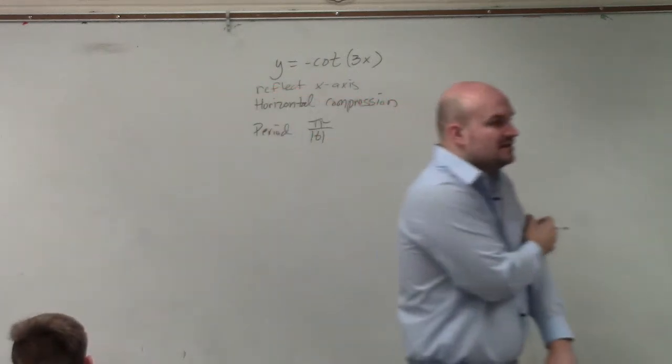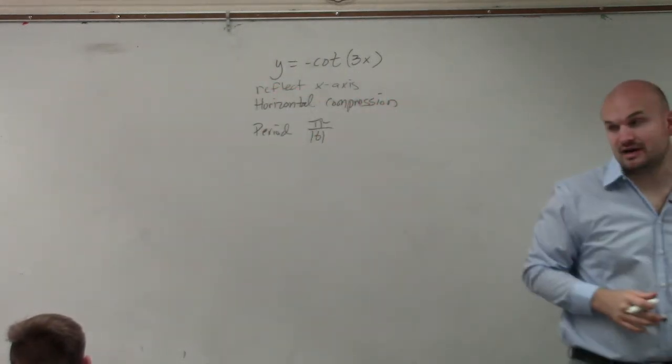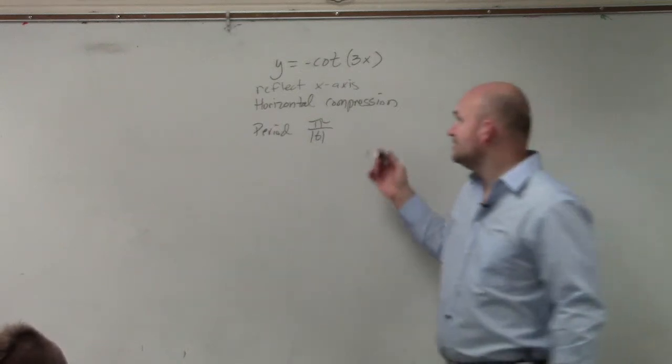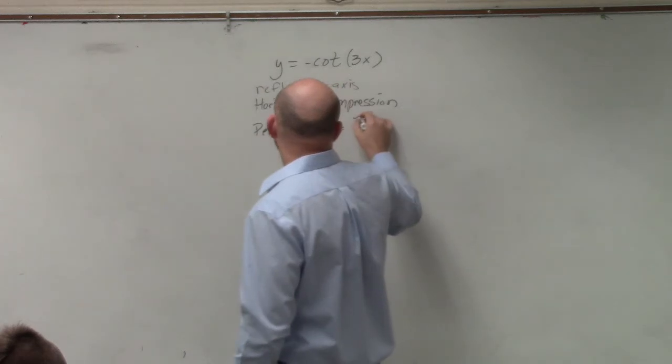So for sine and cosine, the period was 2π divided by b. For tangent and cotangent, the period is going to be π divided by b. So therefore, our period is now π over 3.